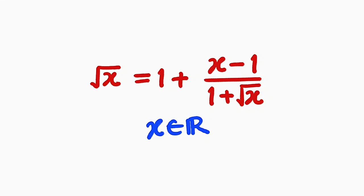Hello, good day viewers. In this tutorial we are going to find a solution to this logical equation. This question was sent to me on Facebook yesterday and we're asked to find the real values of x that can satisfy the equation. The equation is the square root of x equal to 1 plus x minus 1 divided by 1 plus square root of x. Let's get started.